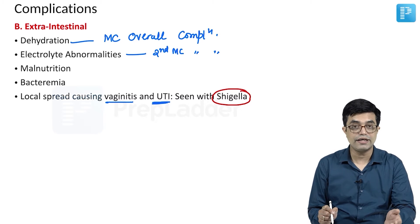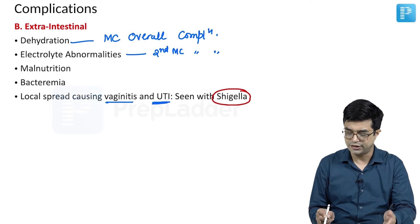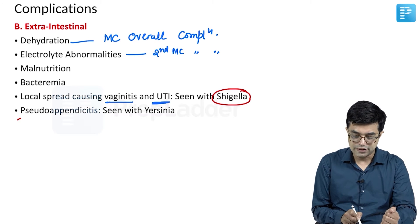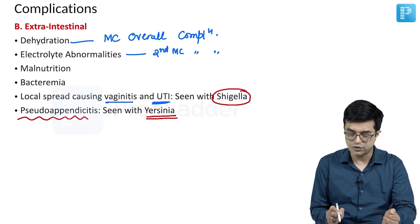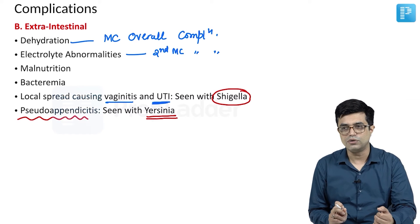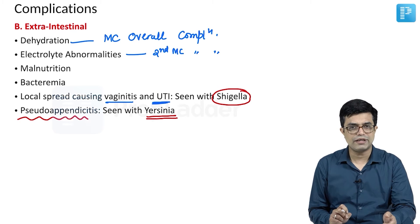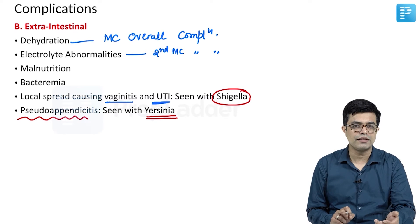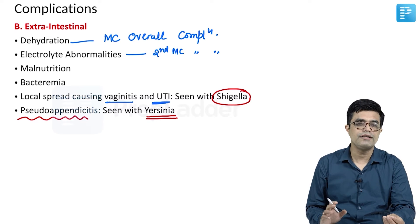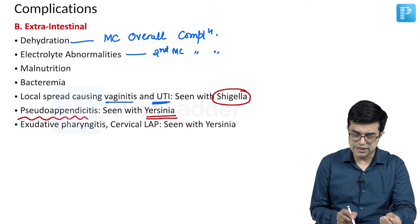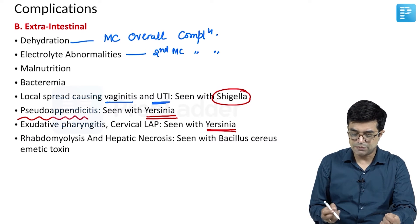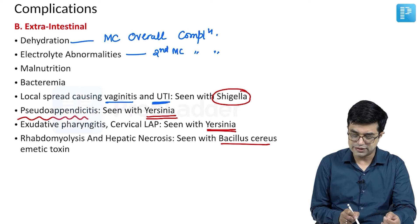Which organism causes vaginitis after a diarrheal episode and UTI? It is Shigella, particularly in females compared to males. Pseudo-appendicitis-like presentation is seen with Yersinia enterocolitica — they will have right lower quadrant abdominal pain, loss of appetite, and similar manifestations on physical examination. Ultrasonography can easily rule out the two conditions. Exudative pharyngitis and cervical lymphadenopathy can also be seen with Yersinia enterocolitica.